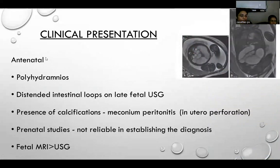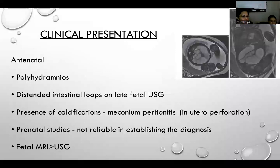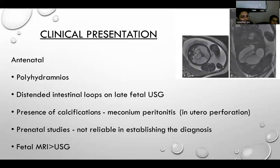In the clinical presentation of jejunal atresia, antenatally, polyhydramnios is associated in the mother, and distended intestinal loops can be seen on late fetal USG. Calcification may be seen in cases of meconium peritonitis if there is intrauterine perforation. However, prenatal studies are not very reliable in jejunal atresia, and fetal MRI is preferred over USG.